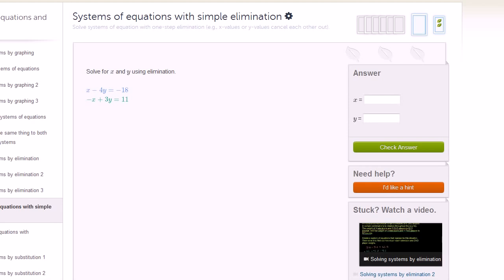We have x minus 4y is equal to negative 18, and negative x plus 3y is equal to 11. So let's try to work this out. I'll get my little scratch pad out. Let me just rewrite it again. It never hurts to rewrite it to get more familiarity with the problem. So x minus 4y equals negative 18, and then we have negative x plus 3y equals 11.